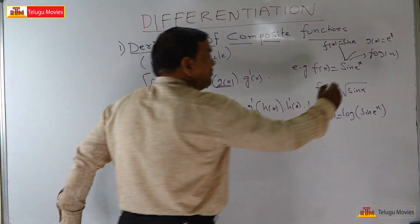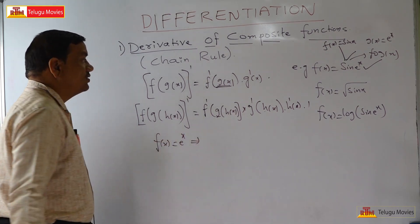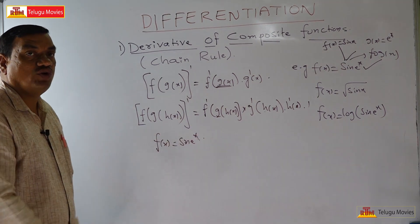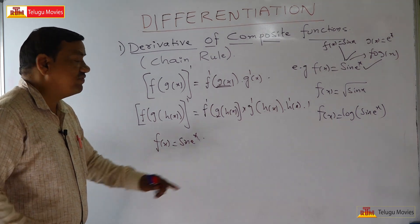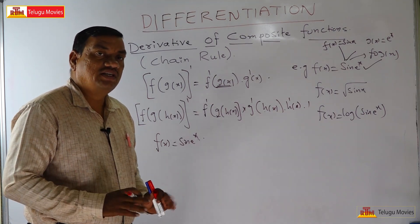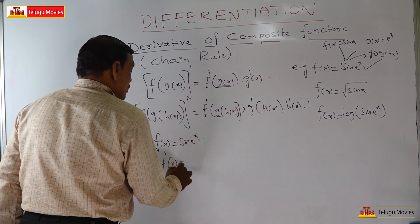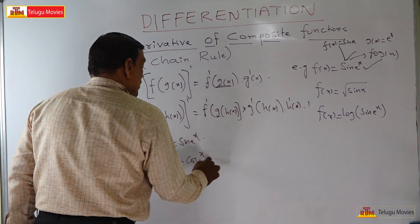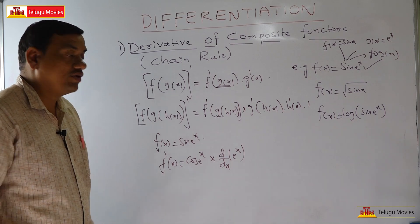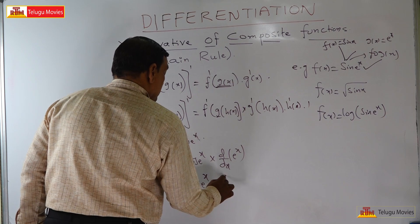Let us see the first function: f of x is equal to sin of e power x. How to find the derivative? In place of e power x, think that it is x. The derivative of sin x is cos x, so f dash is cos of e power x. Then find the derivative of e power x, which is e power x. So the answer is: the derivative of sin of e power x is e power x into cos of e power x.